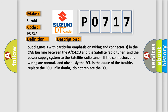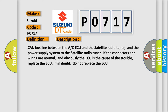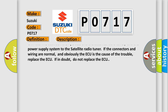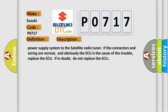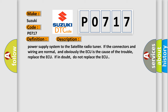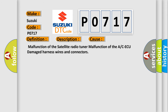Carry out diagnosis with particular emphasis on wiring and connectors in the CAN bus line between the ACAQ and the satellite radio tuner, and the power supply system to the satellite radio tuner. If the connectors and wiring are normal and the ACAQ is the cause of the trouble, replace the ACAQ; if in doubt, do not replace the ACAQ. This diagnostic error occurs most often due to malfunction of the satellite radio tuner, malfunction of the ACAQ, or damaged harness wires and connectors.